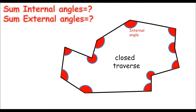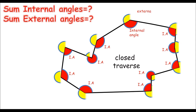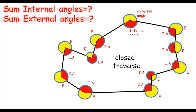This is called the sum of internal angles. The sum of external angles refers to those angles which are forming outside of a traverse at its vertices. By adding all these angles we can get the sum of external angles of a traverse. Now, how do we find the sum of internal and external angles?